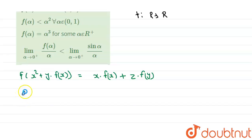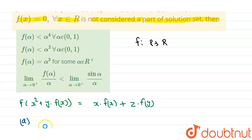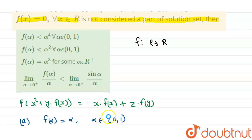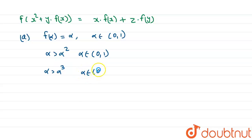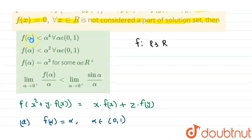We will check option A. If this is a linear relation type, then f(α) = α where α belongs to the open interval (0, 1). In between 0 to 1, as we increase the power, the value decreases. So α > α² > α³ > α⁴ for α ∈ (0, 1). Option A states that f(α) < α⁴, which contradicts this. So option A is wrong.